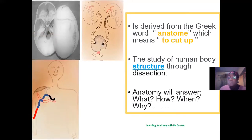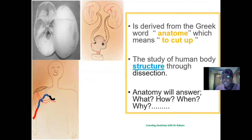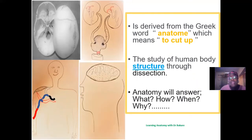Anatomy also helps answer the question of when. Different structures in different regions are tagged different names. For example, the subclavian artery becomes the axillary artery as soon as it passes through the axilla, and when it exits the axilla it becomes the brachial artery. Anatomy provides answers as to when a structure changes its name and the basis for that change.